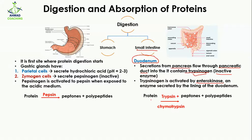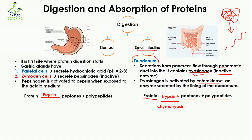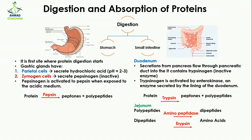Trypsin converts protein into peptones and polypeptides. So up to this point in the duodenum, the complex protein structure has been digested into polypeptides. Another enzyme also acts in the duodenum — chymotrypsin. Both trypsin and chymotrypsin act on protein to digest it into polypeptides.